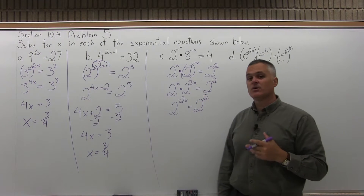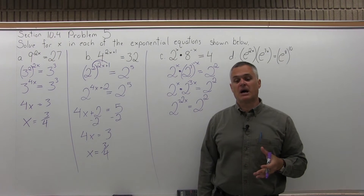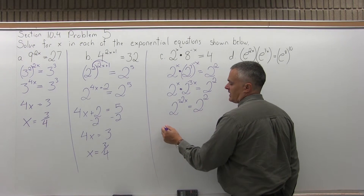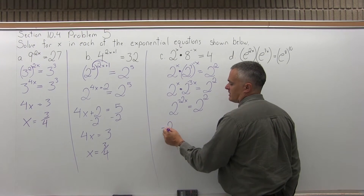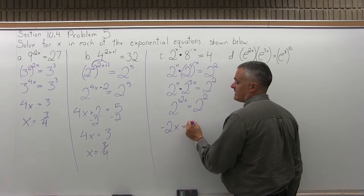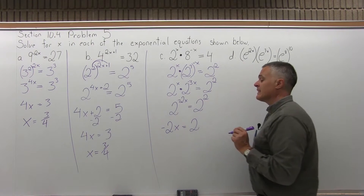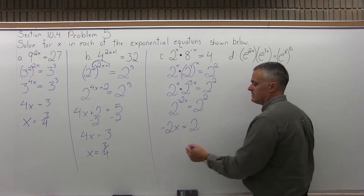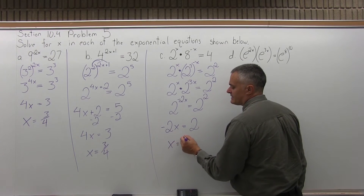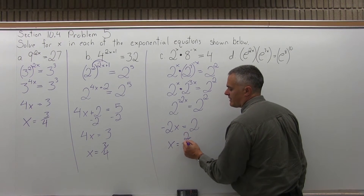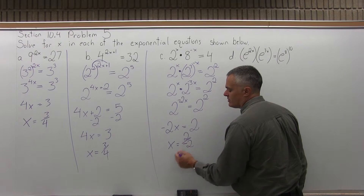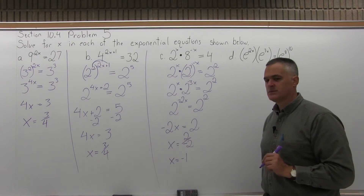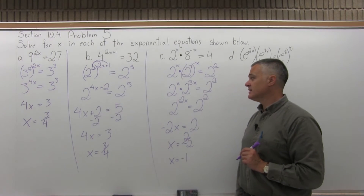So the whole left side of the equation boils down to 2 to the power negative 2x, and that equals 2 to the positive 2. Now both sides are 2 to some power, so set the exponents equal: negative 2x equals 2. Divide out the negative 2, and x equals 2 divided by negative 2, which reduces to x equals negative 1. That's the answer for part C.